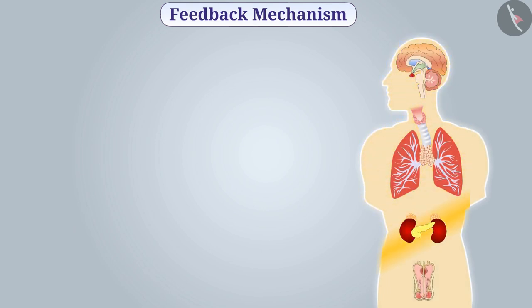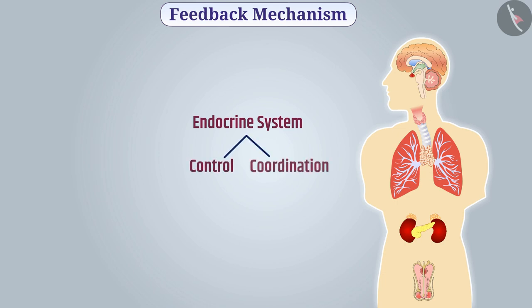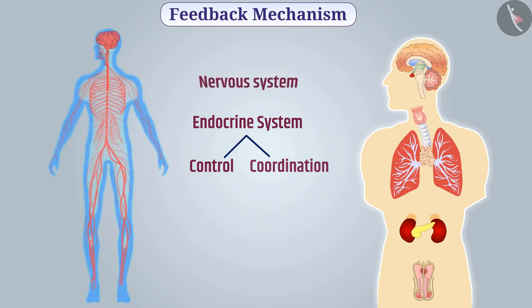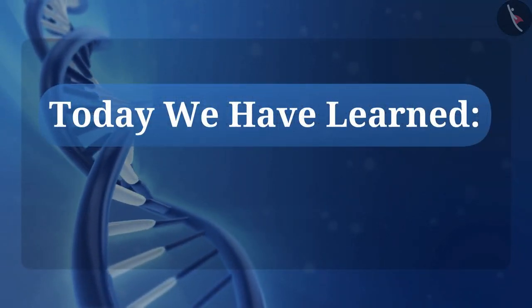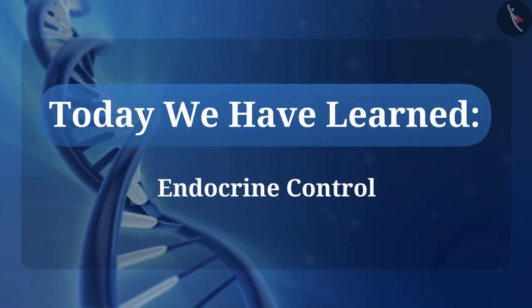The endocrine system also assists in the control and coordination of the body. Therefore, the nervous system and the endocrine system together perform the function of control and coordination in the body. Today we have learned about endocrine control.